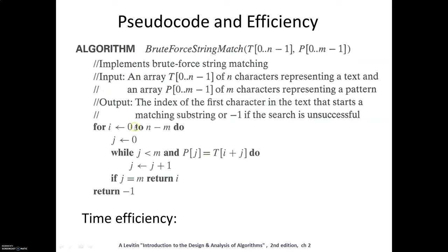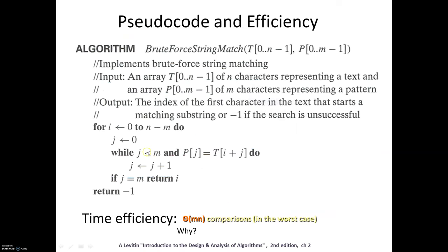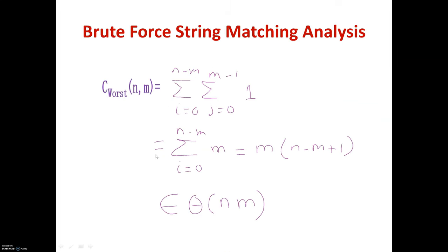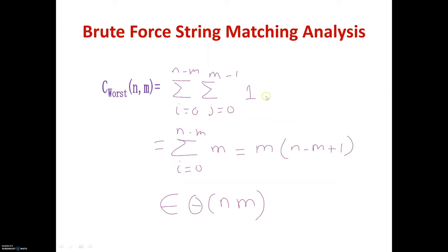For the analysis: i is varied from 0 to n minus m, and j from 0 to m minus 1. In each iteration the basic operation performed is a comparison. Simplifying the inner loop gives m, and multiplying gives m × (n - m + 1), which belongs to θ(n × m).